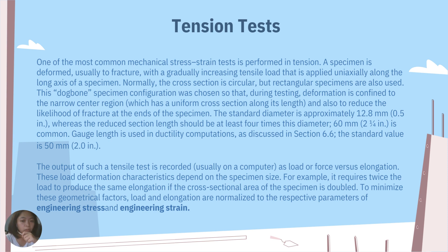16 mm or 2¼ inches is common. Gauge length is used in ductility computations; as discussed in section 6.6, the standard value is 50 mm or 2 inches. The output of such a tension test is recorded usually in a computer as load or force versus elongation. These load-deformation characteristics depend on the specimen size. For example, it requires twice the load to produce the same elongation if the cross-sectional area of the specimen is doubled. To minimize these geometrical factors, load and elongation are normalized to the respective parameters of engineering stress and engineering strain.